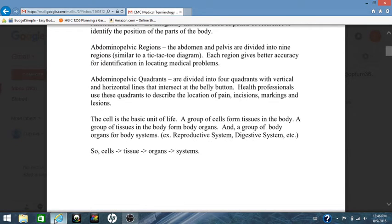The cell is the basic unit of life. A group of cells form tissues in the body, and a group of tissues in the body form body organs, such as your intestines, such as your arms or your legs. And these group of body organs form body systems. For example, the reproductive system, the digestive system, etc.